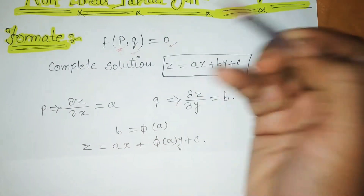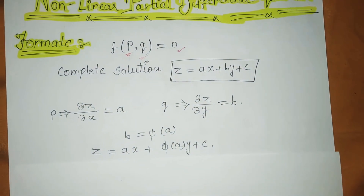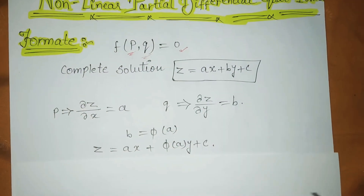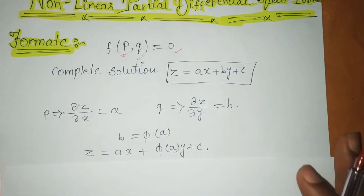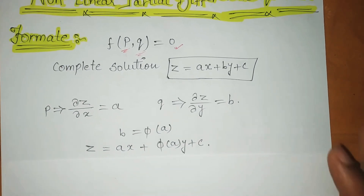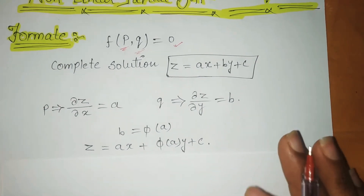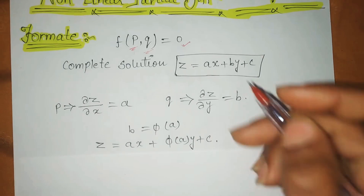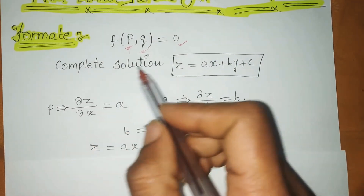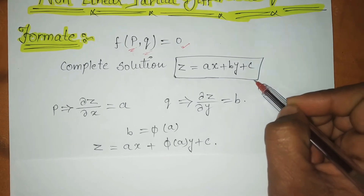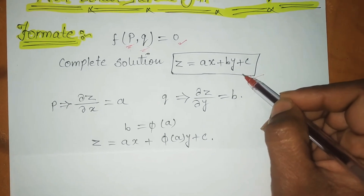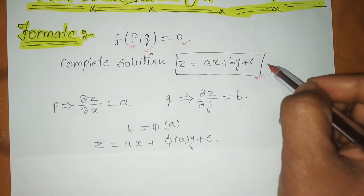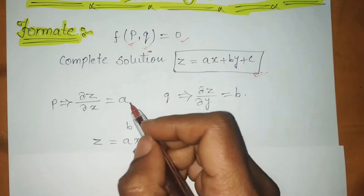The first standard form has a format involving P and Q. When you study all four formats, you can differentiate between each one easily. Next is the complete solution, whose format is: z = ax + by + c. This is the complete solution.